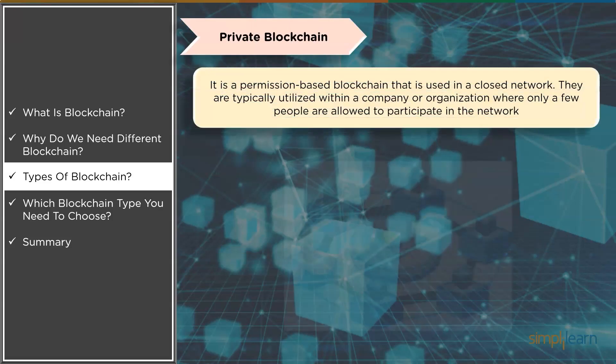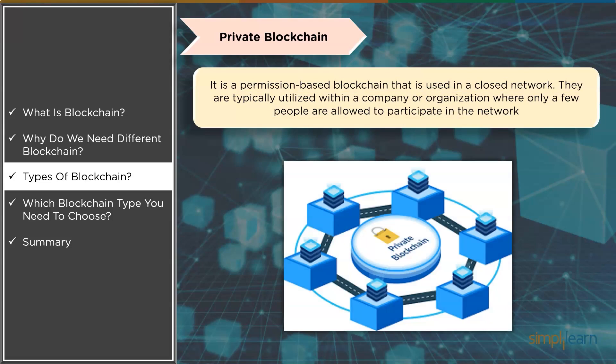A private blockchain is a blockchain network that operates in a restricted context, such as a closed network, or is controlled by a single entity. While it functions similarly to a public blockchain in terms of peer-to-peer connectivity and decentralization, this blockchain is substantially smaller. Private blockchains are often run on a small network within a firm or organization rather than being open to anyone who wants to contribute processing power. They are also referred to as permissioned blockchains or business blockchains.